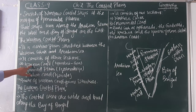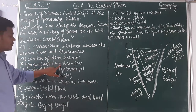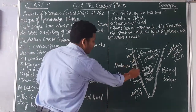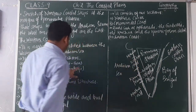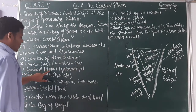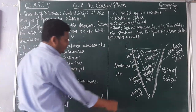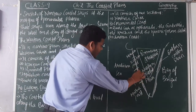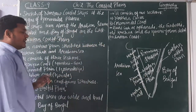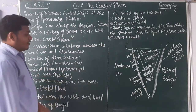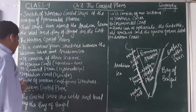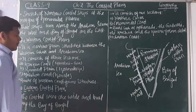The three sections are: first, the Konkan Coast, which lies between Mumbai and Goa; second, the Karnataka Plains, which is the part of the coastal plain opposite Karnataka; and third, the Malabar Coast in Kerala.